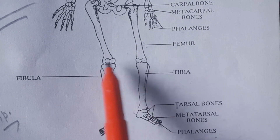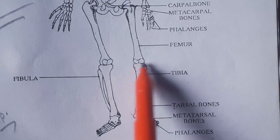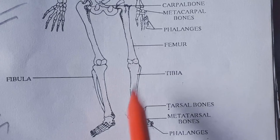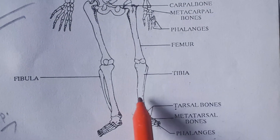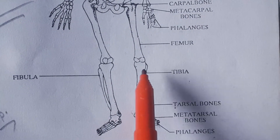The skeleton of the leg has three parts. The large leg bone is the first, and the second is another bone alongside it.